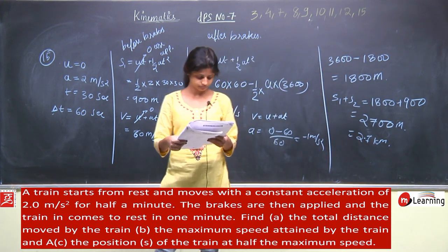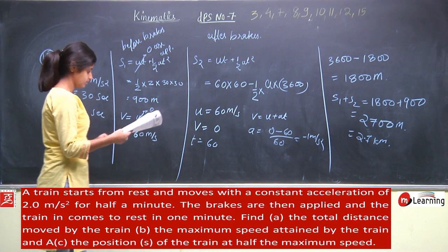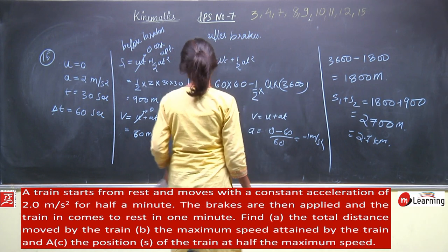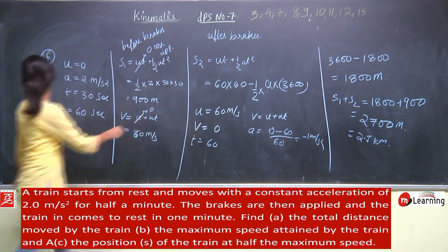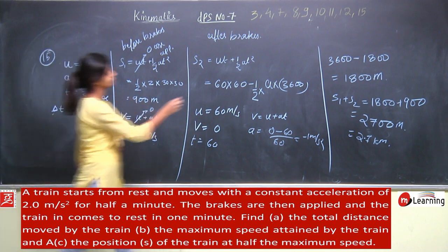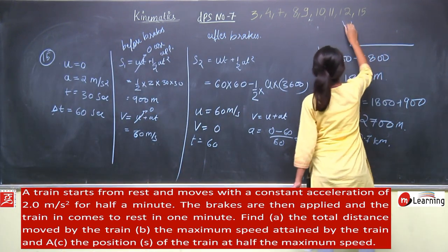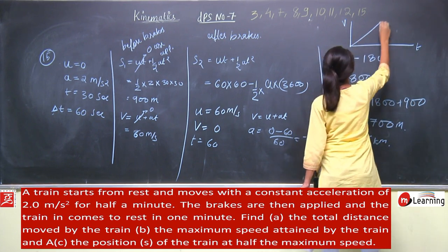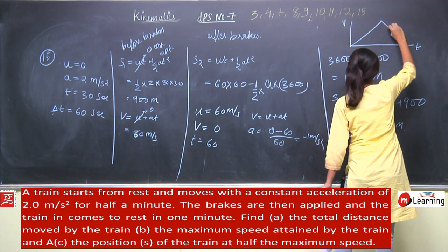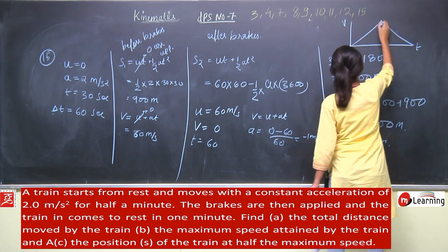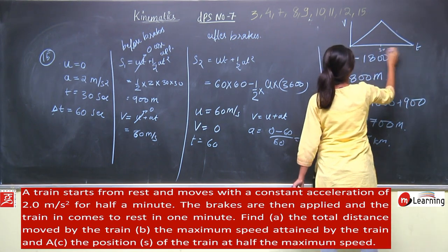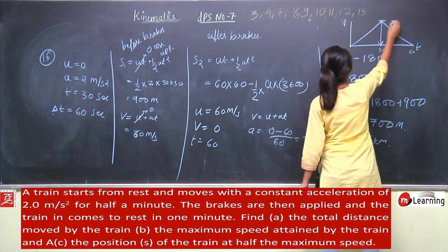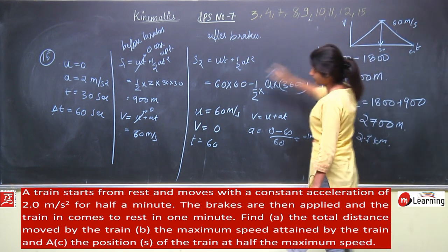Then, maximum speed attained by the train. We draw the velocity versus time graph. Velocity initially starts from 0 and increases with constant acceleration, then decreases after braking. The slope is shown at t equal to 30 and t equal to 90. Maximum speed is attained at t equal to 30 second and that is 60 meter per second, as calculated.